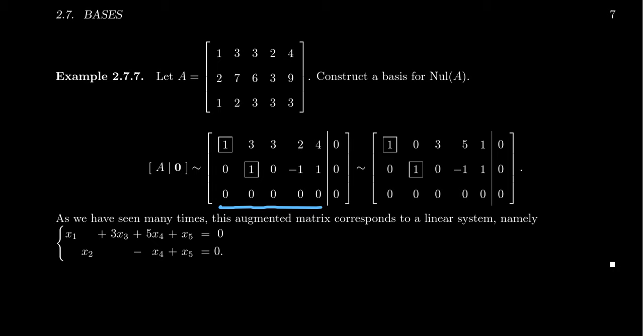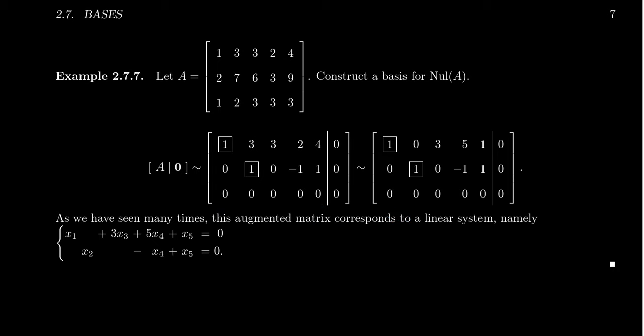Now that matrix is not yet in row reduced echelon form. To solve for the null space, although you can get away with echelon form, you probably want row reduced. So let's do one more step to get rid of the three right here — we're just going to take row one minus three times row two, and we get the following matrix. This matrix right here is the RREF of A.